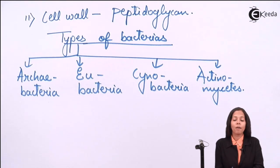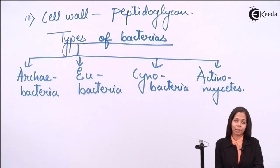Example of Archaebacteria is Methanobacillus and Thiobacillus. Example of Eubacteria is Rhizobium and Clostridium. Example of Cyanobacteria is Nostoc and Anabaena. Example of Actinomycetes are Streptomyces and Mycobacterium.